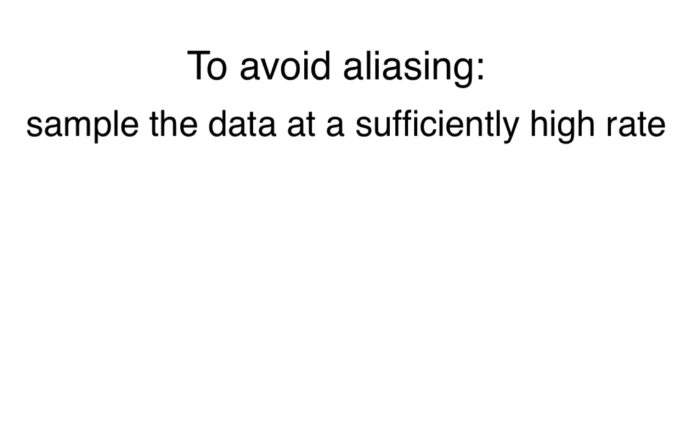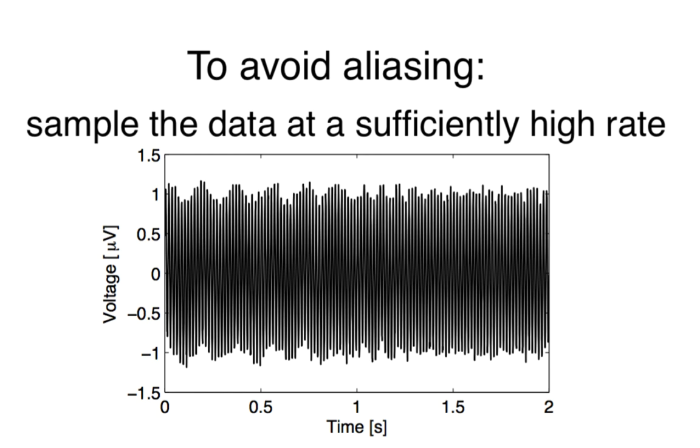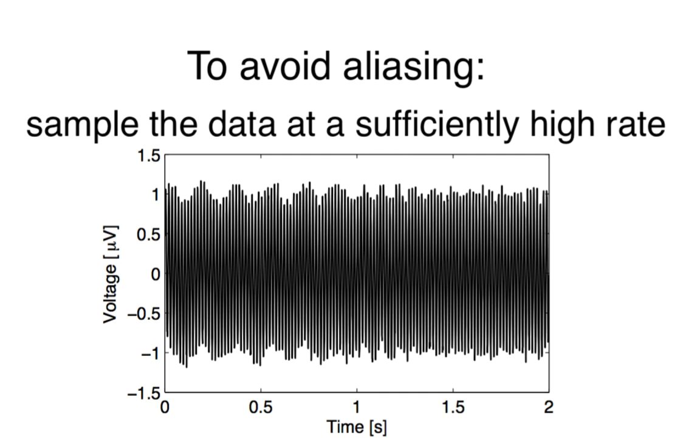To prevent aliasing in practice, one method might be to pass the data through an analog filter before digital sampling occurs. In this case, for the EEG data of interest to us, we are told that the data were first analog filtered at 200 Hz before digital sampling occurred at 1000 Hz. So for these EEG data, aliasing is not a concern.